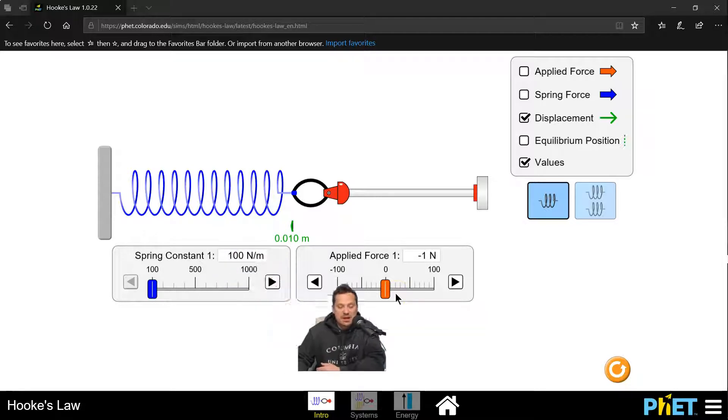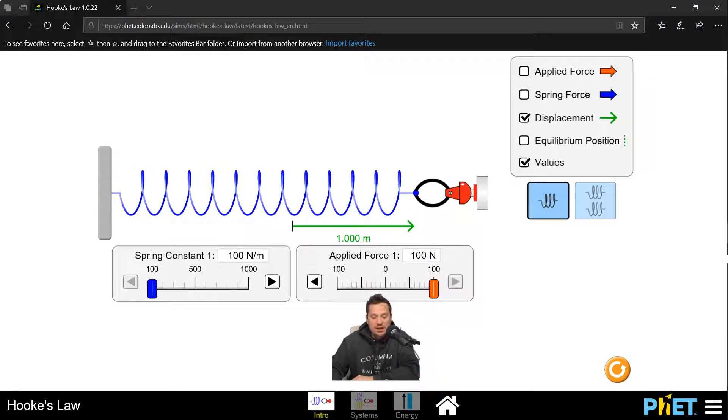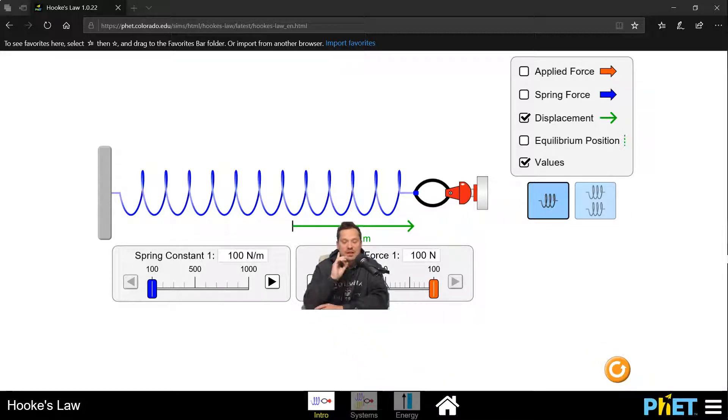So what I'm going to do is I'm going to apply a force to the spring. I'm going to apply the force to the right. So look carefully. I'm going to pull it this way and stop. So this is a force of 100 newtons, and look up here. It gives a displacement of 1 meter.